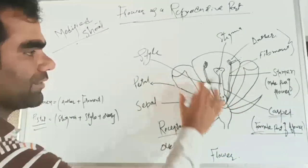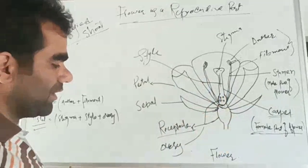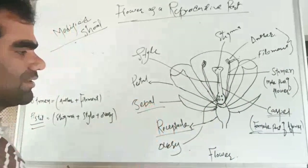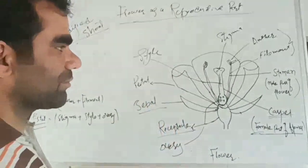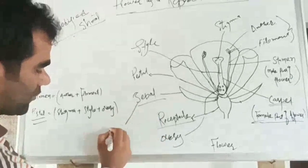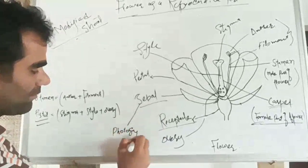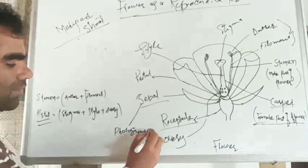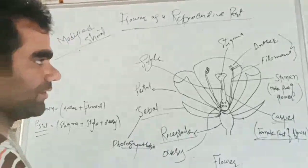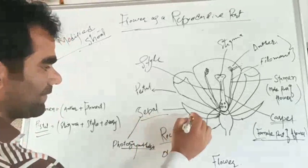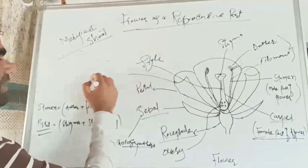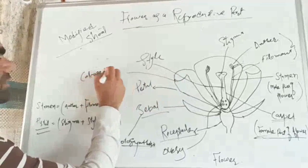First, this is the receptacle, from which all the whorls are attached. This part is known as the receptacle. After that, this is known as the sepal. Sepal is a protective part of the flower which gives protection to the whole upper part of the flower. Sepals also play a role in photosynthesis, in making food for the plant. So sepal plays a role in photosynthesis and also as a protective part of the flower.